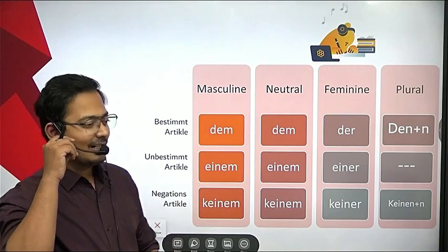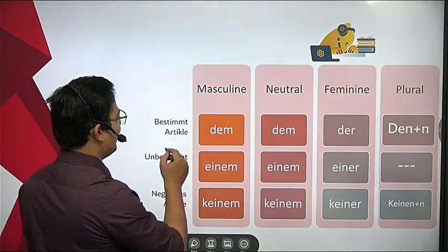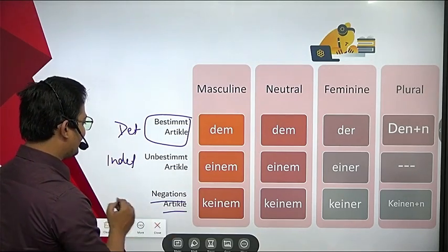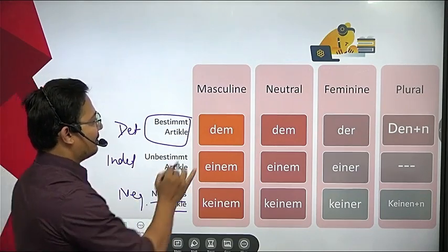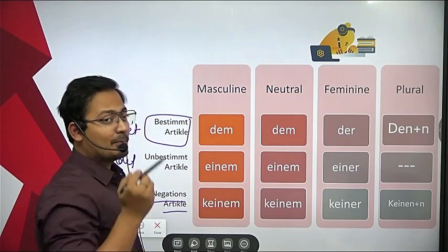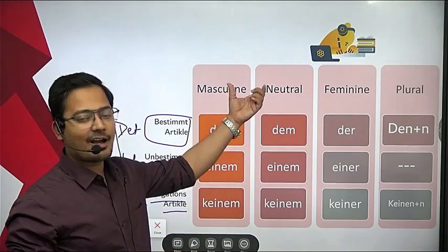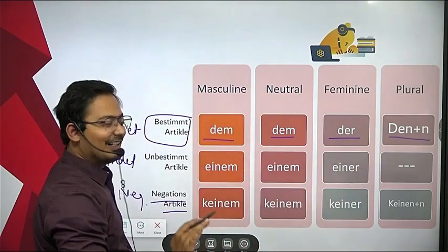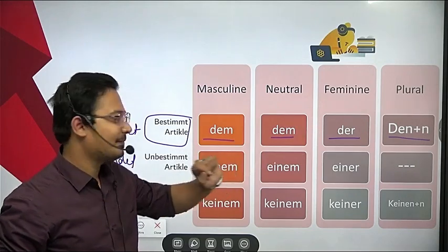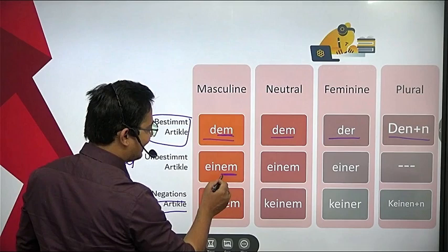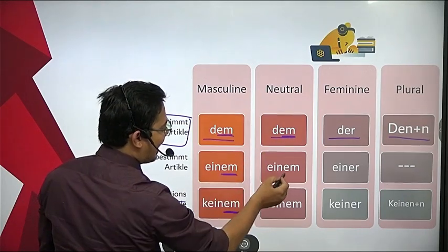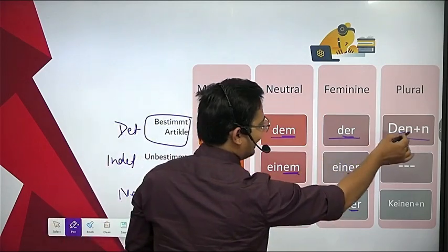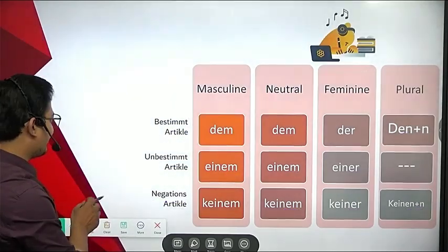Let's look at dative articles. We have bestimmter Artikel (definite article), unbestimmter Artikel (indefinite article), and negative article. The genders in German are masculine, feminine, neutral, and plural. For dative: definite articles are dem, der, dem, den plus n. Indefinite articles follow the same pattern: einem, einer, einem, and nothing for plural. Negative articles add 'k' before.